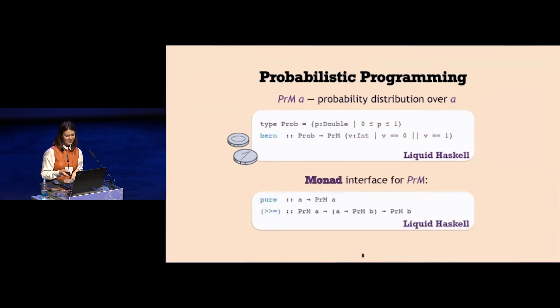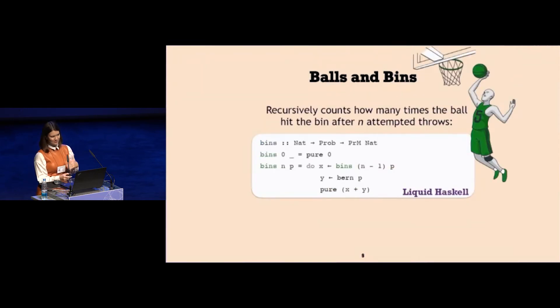I define a monadic interface for my type prm. The pure is a singleton distribution. It takes one element of type a and produces a distribution which is a with probability one. Bind is a sampling operation, so I have a distribution of elements a and a function that can operate on a single sample from that distribution. The result is the result of sampling one element from the first distribution and applying the function.